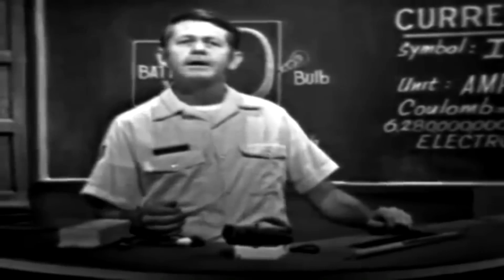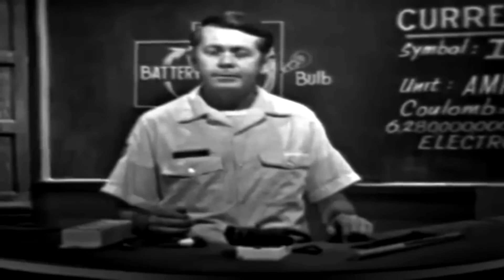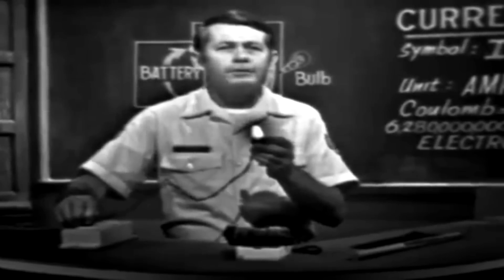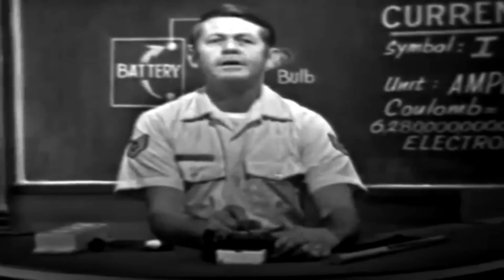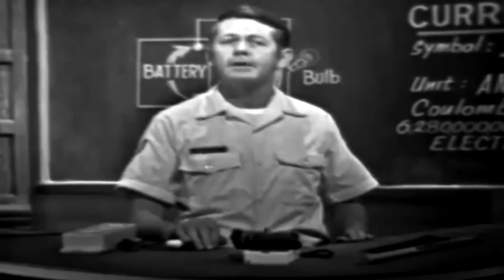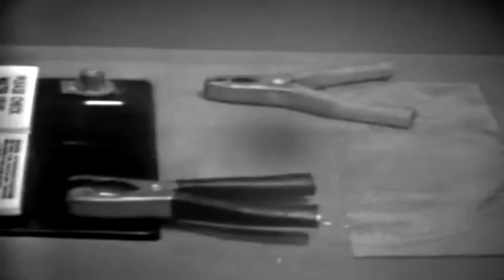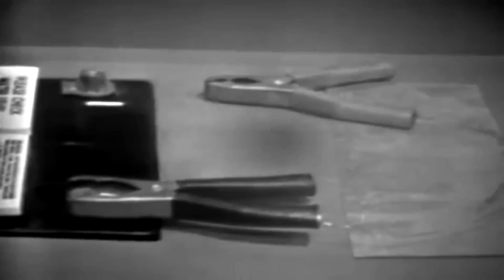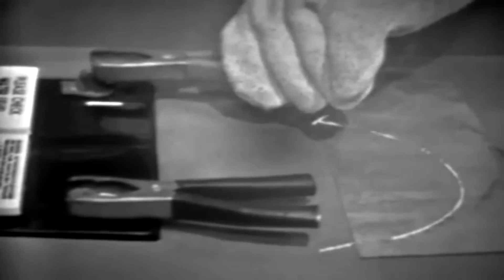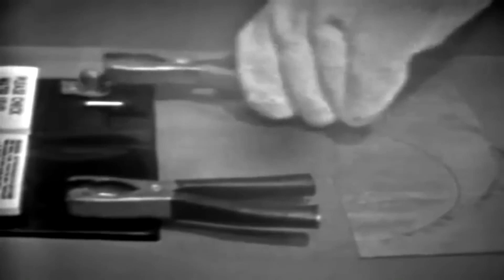Remember also that current is the movement of electrons. It will cause a bulb to give off light, it will cause a radio to produce sound, and it's the force that does the work in radar, computers, and communication. We've seen that when a conductor is placed across a voltage, the voltage will cause too much current to flow and burn up the wire. On the other hand, if an insulator is used, very high and dangerous voltage is required to cause any current. In the next lesson, we'll talk about a happy medium.